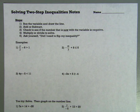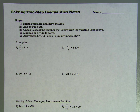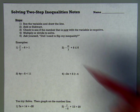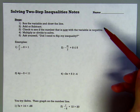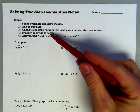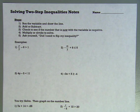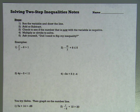Today's lesson is on solving two-step inequalities, so go ahead and make sure you copy down the steps. Just like our two-step equation problems, we're going to be adding or subtracting first, and then we're going to multiply or divide after that. The one thing we have to remember about when we multiply and divide is whether we have a negative number, because if we do, we're going to have to flip our inequality.